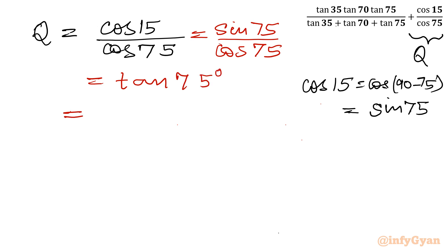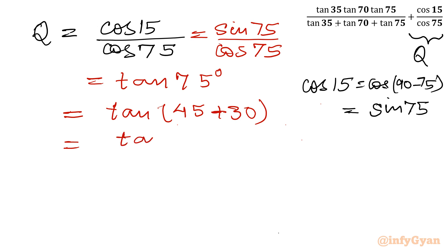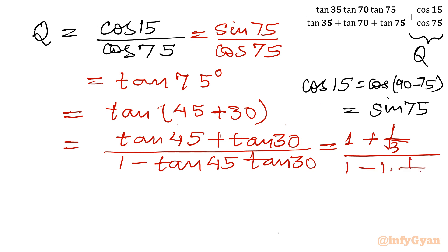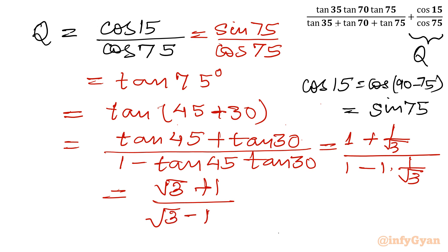Using the tan(A plus B) formula, we write tan 75 as tan(45 plus 30). Applying the formula: tan 45 plus tan 30, divided by 1 minus tan 45 times tan 30. Since tan 45 equals 1 and tan 30 equals 1 over root 3, taking the LCM gives root 3 plus 1 over root 3, divided by root 3 minus 1 over root 3. The root 3 cancels, giving Q equals root 3 plus 1 over root 3 minus 1.